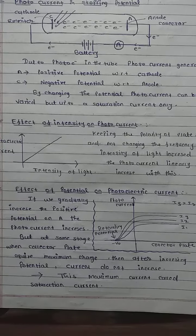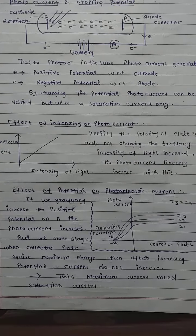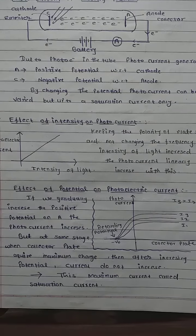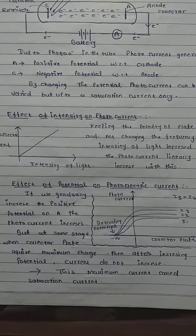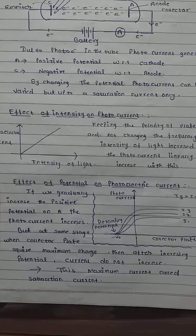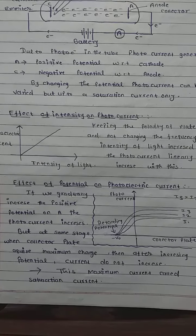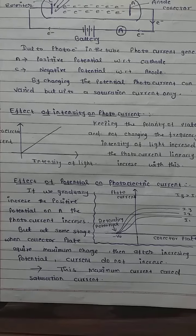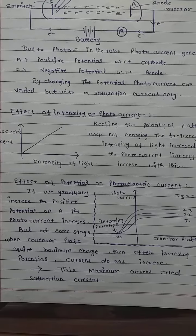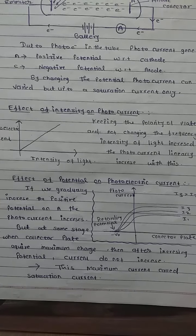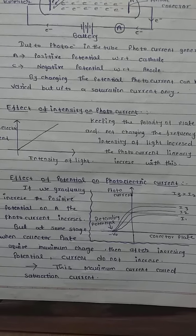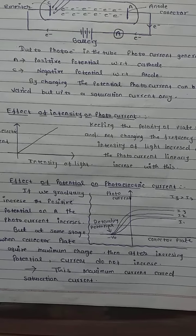But at some stage, when the collector plate acquires maximum charge, then after increasing the potential, current does not increase. जब collector plate ने maximum amount of charge acquire कर लिया है और उसके बाद उसकी capacity नहीं है, तो जितना भी potential को increase किया जाए, current नहीं बढ़ेगा। This maximum current is called saturation current। Potential को जितना भी vary किया जाए, कोई change नहीं होगा।